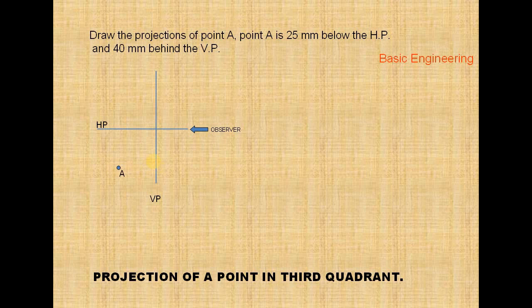This is the point A. From HP it is 35 mm, from VP it is 40 mm. Below the HP, 40 mm behind the VP — you get the front view like this.